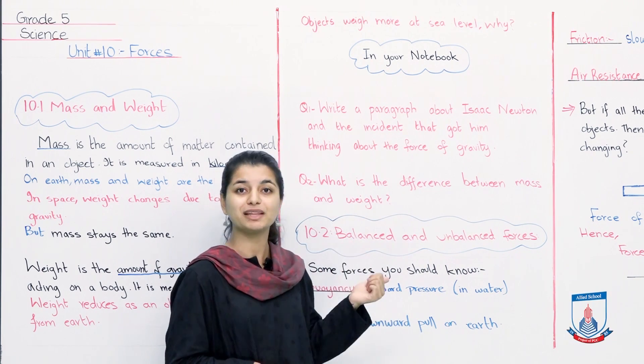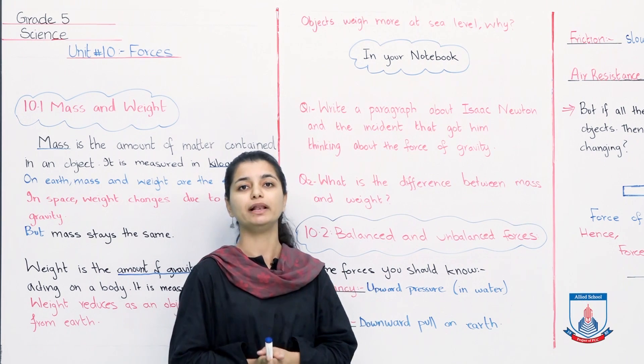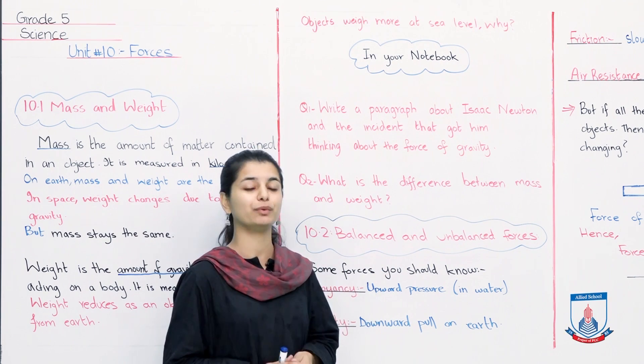You will write the definitions of mass and weight, you will tell that mass is the amount of matter in an object, whereas weight is the amount of gravitational force acting on an object. And you can also tell the difference in their units - mass's unit is kilogram, whereas weight's is newtons, exactly. So that you can explain over here. These questions, will you be able to attempt them now? I'm pretty sure you will. So now we can move to unit 10.2. Let's see what that's about.